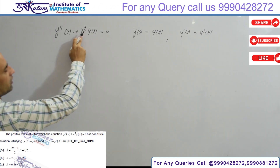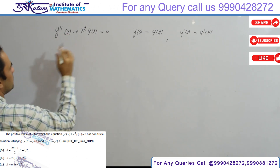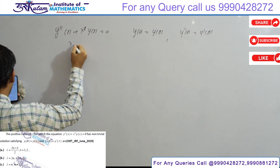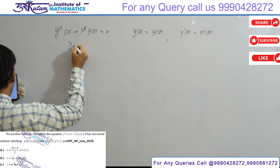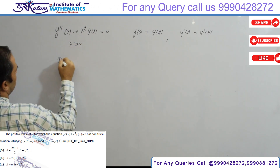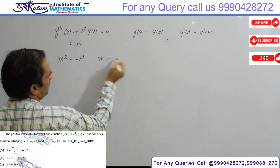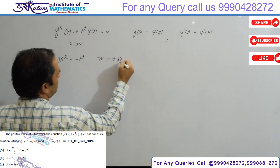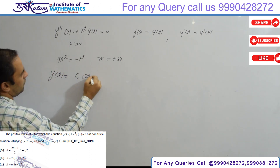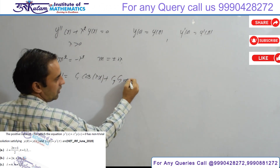We need to find the λ² values, which are the eigenvalues. Since λ already has a positive value, we write the auxiliary equation: m² = −λ², giving roots ±iλ. So the general solution is y(x) = c₁cos(λx) + c₂sin(λx).